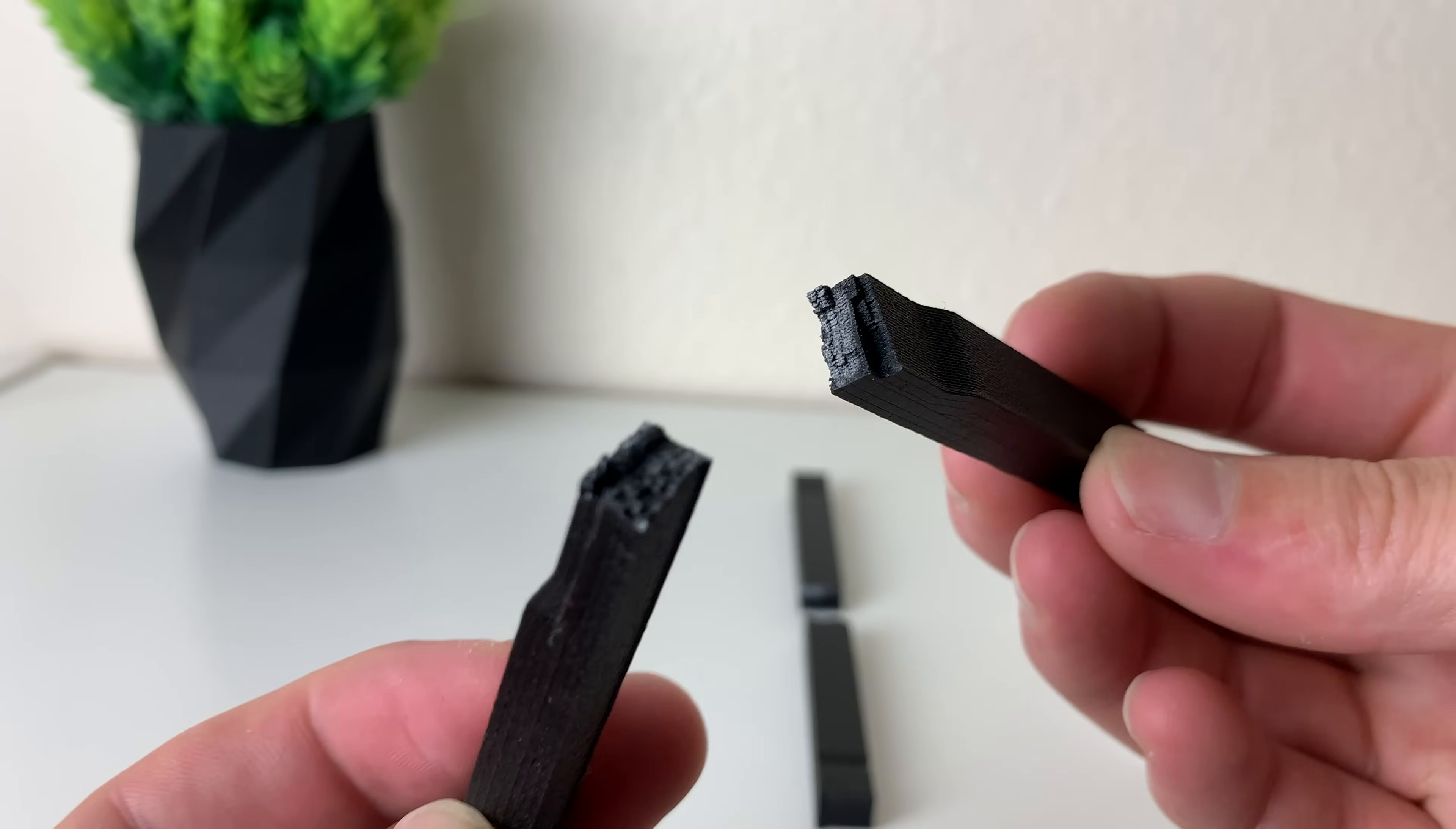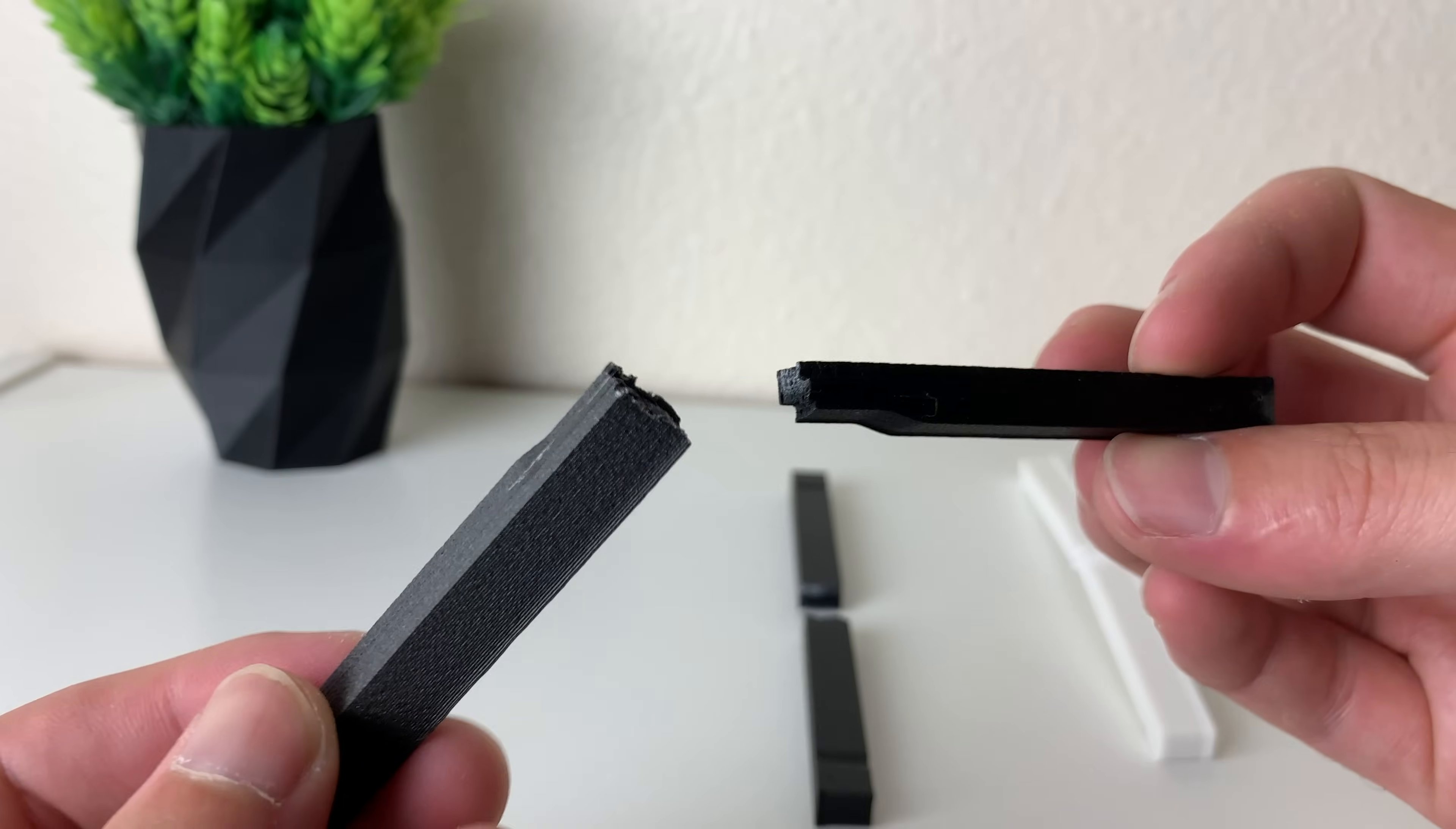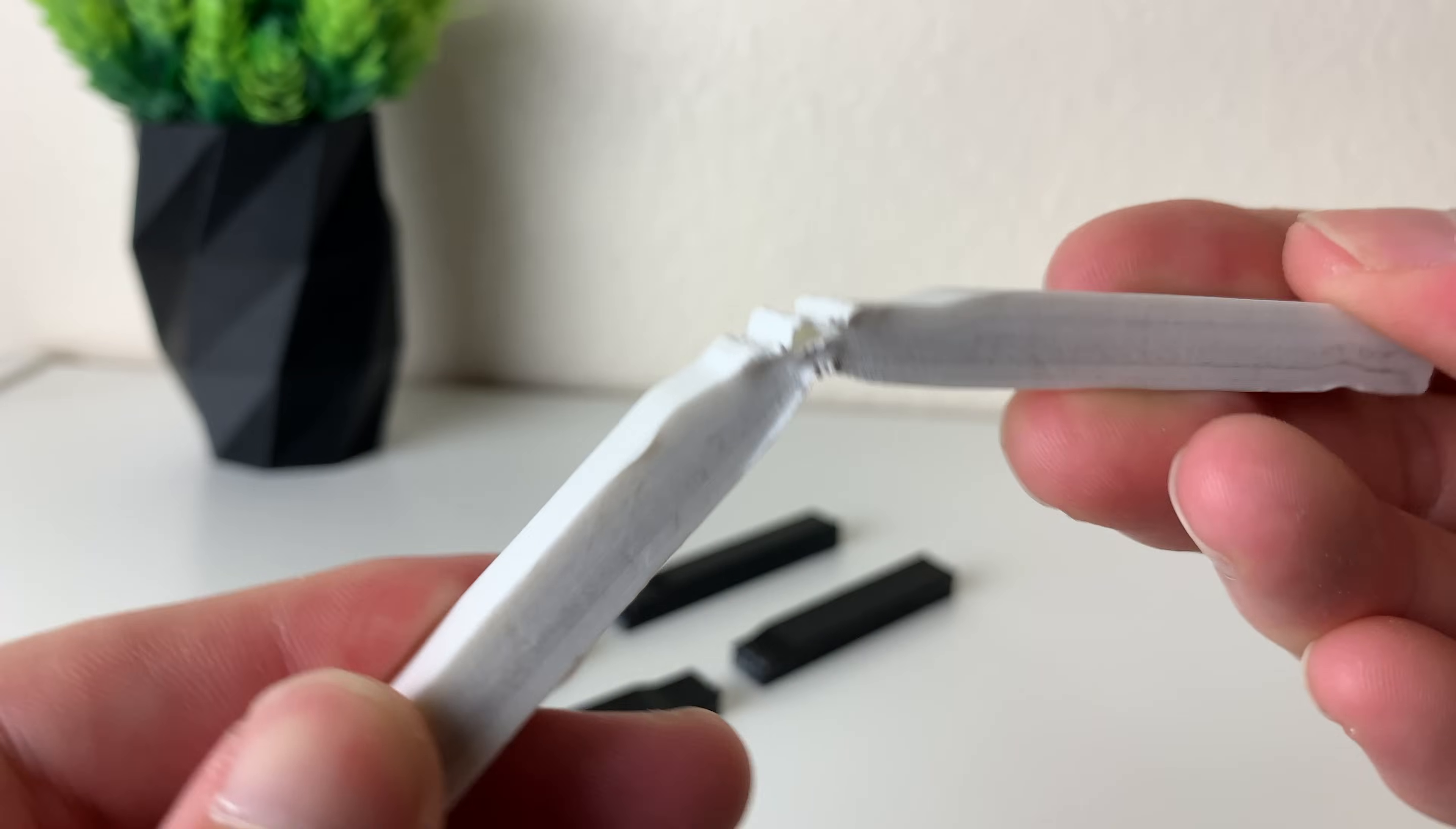So which material is actually stronger? You can see here how the carbon fiber part actually snapped and didn't really bend during failure. This is compared to the normal 3D printed part which I actually haven't gotten to break yet.